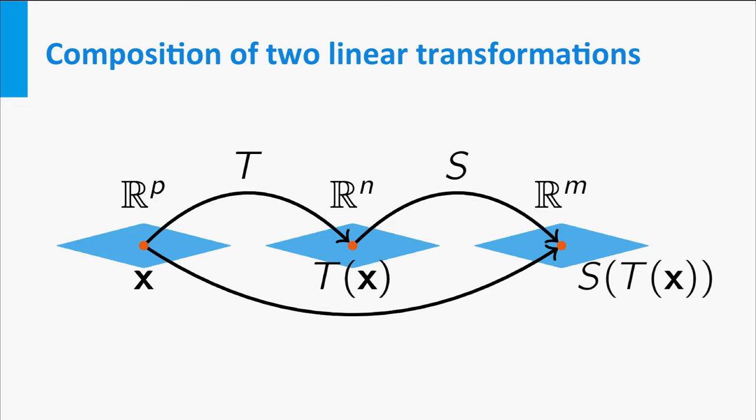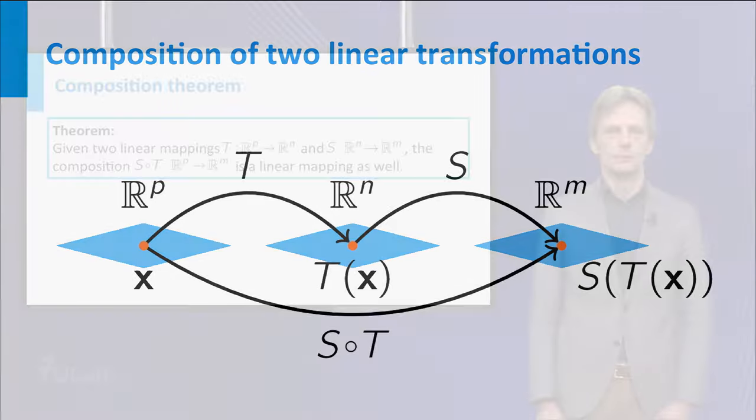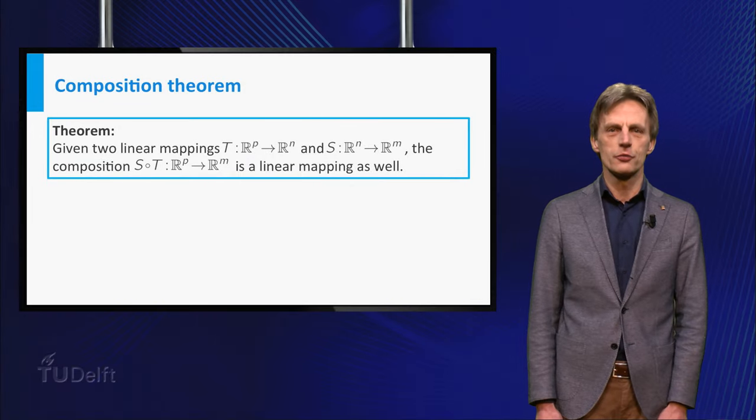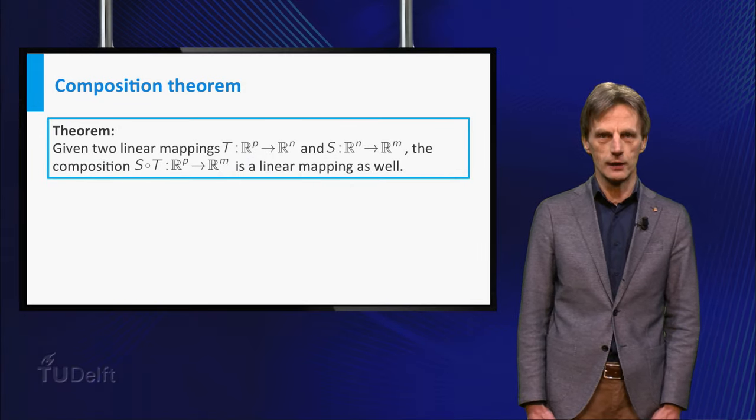The transformation that maps x in Rp to S of T of x in Rm is called the composition of T and S in that order and is denoted by S small circle T. It turns out that the composition of the two linear mappings T and S is linear as well.